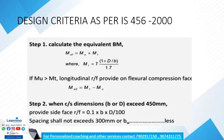The design criteria cover the reinforcement of members subjected to torsion. Two types of reinforcement are required: longitudinal reinforcement and transverse reinforcement — both torsional longitudinal and torsional transverse.